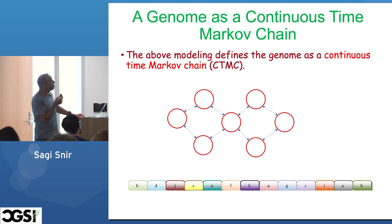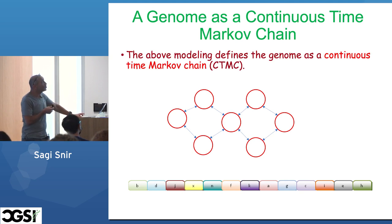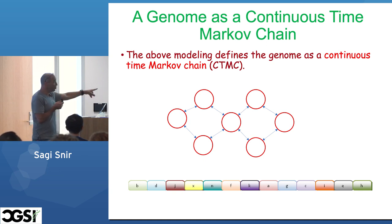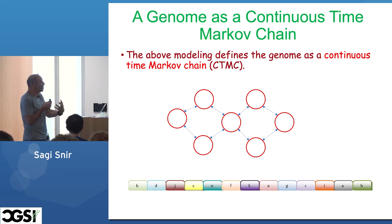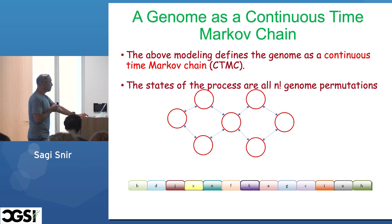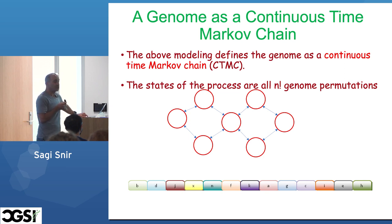The above modeling defines a genome as a continuous-time Markov chain, where the state of the chain is the gene order. Every gene order is some state in that Markov chain. The state space of the process consists of all N factorial genome permutations.